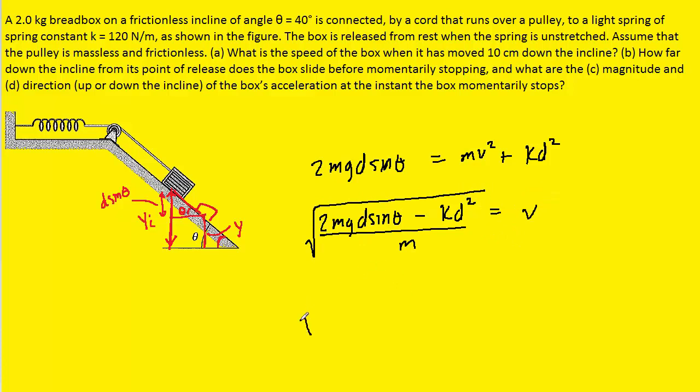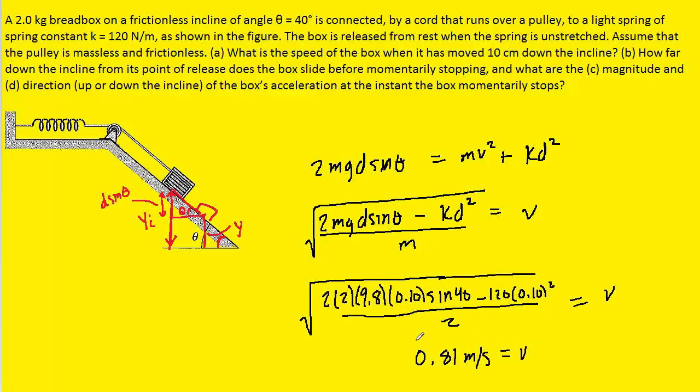We could then plug in all the known values for mass g, the distance d that the box slid down the ramp, the angle theta, and the spring constant as well. When we carefully type that in, we should get about 0.81 meters per second for the final speed and the correct answer to part a. Notice that we converted the distance from centimeters into meters, and that's why we have 0.10 meters for the value of d.